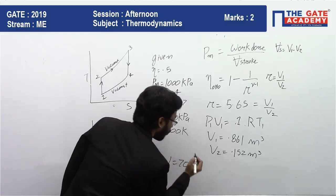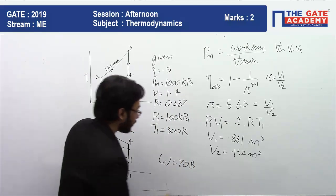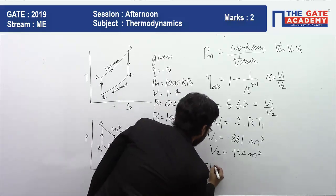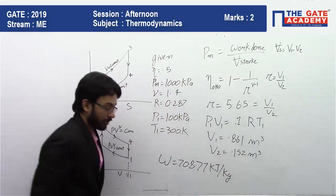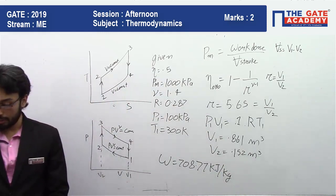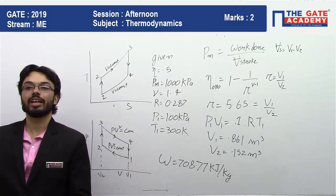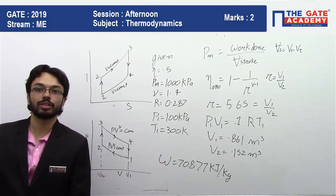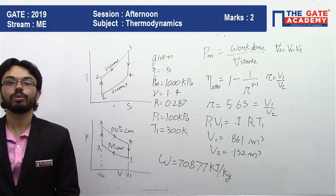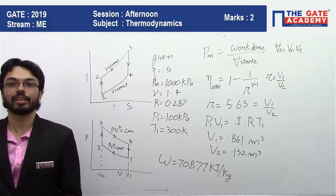Substituting all values, the specific net work output of the cycle is 708.77 kilo joule per kg. This is the final answer. Thank you, I hope you liked this solution — please share it with your friends.